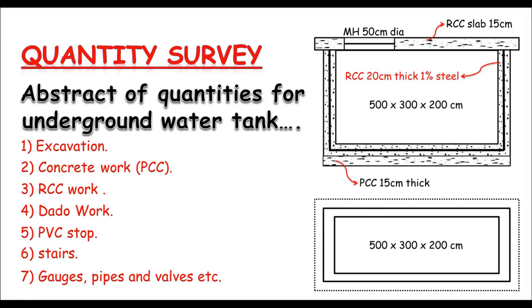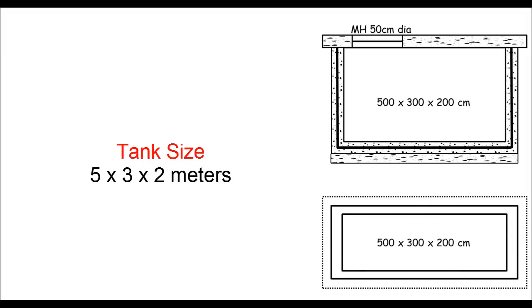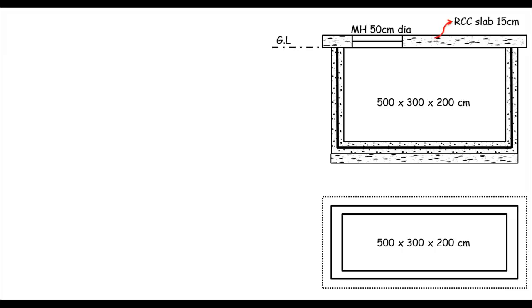Before doing any calculation, I'll assume a rectangular water tank. This is the base of the water tank and that one is just a slab, and these are the walls — the lines represent the steel in the RCC work. There's a manhole in the slab having 50 centimeter diameter. The tank size is 5 × 3 × 2 meters or 500 × 300 × 200 centimeters. Other given information includes ground level, slab thickness, PCC thickness, steel at one percent, and a cantilever portion of the slab of 30 centimeters.